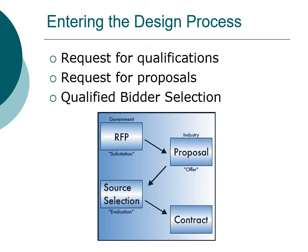MSU uses this procedure — it has a list of qualified bidders, issues a request for proposals from that subset of engineering and construction firms, and then selects from that. Basically, you go typically from a request for proposals, to submission of a proposal, to selection, and then the issuing of a contract.